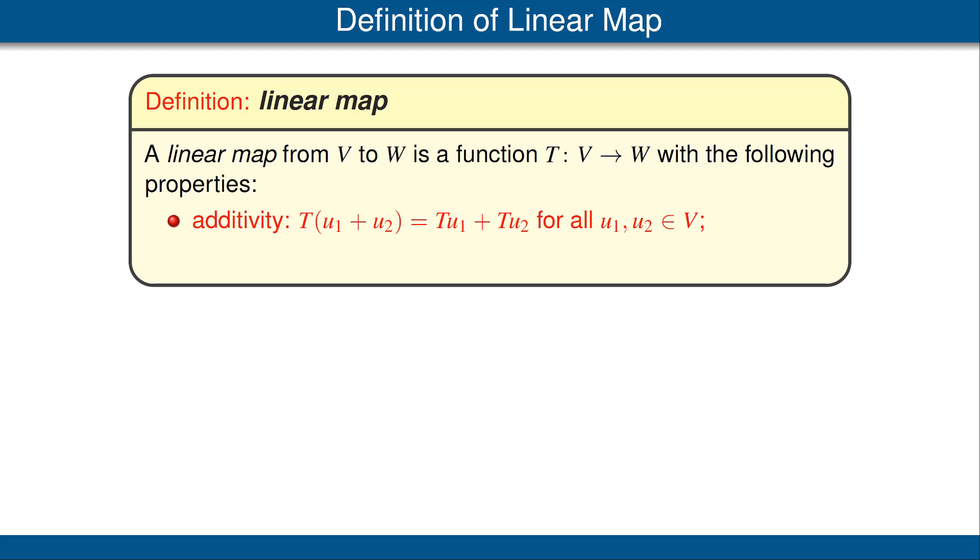The first of these properties is called additivity. It says T applied to u_1 plus u_2 is equal to T(u_1) plus T(u_2), and this needs to hold for all vectors u_1 and u_2 in V. The second condition required to call a map linear is homogeneity, which says that T applied to lambda u is lambda times T(u) for all scalars lambda and all vectors u.